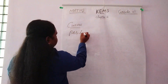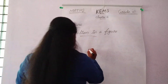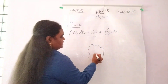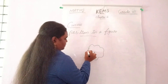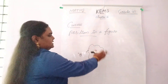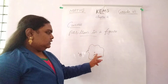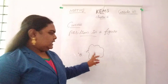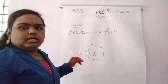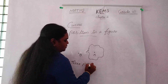Next topic: position in a figure. I am drawing a figure and marking three points — point A, point C, and point B. In this curve, point A is inside, point C is on the curve, and point B is outside the curve. So these are the three positions.